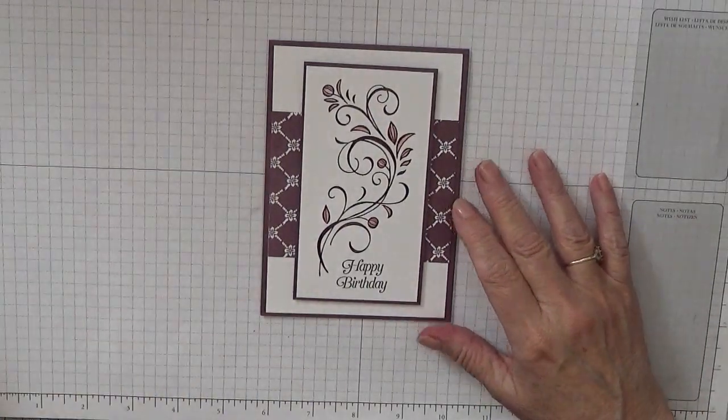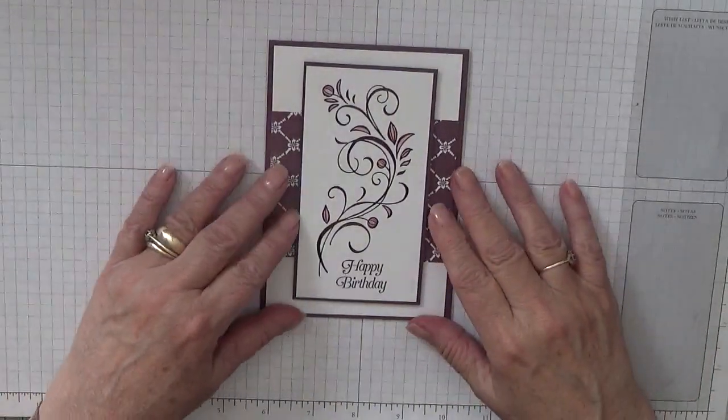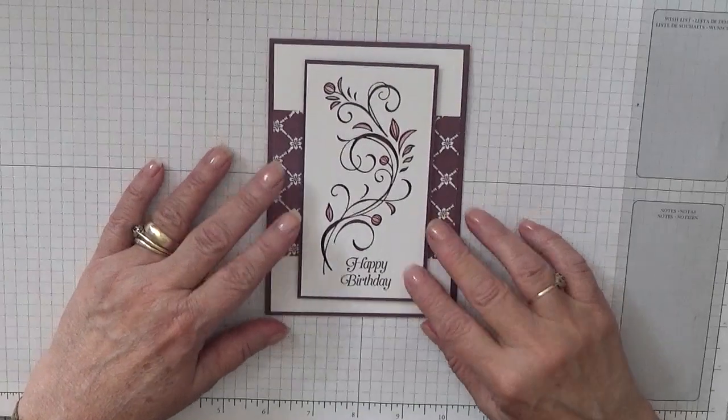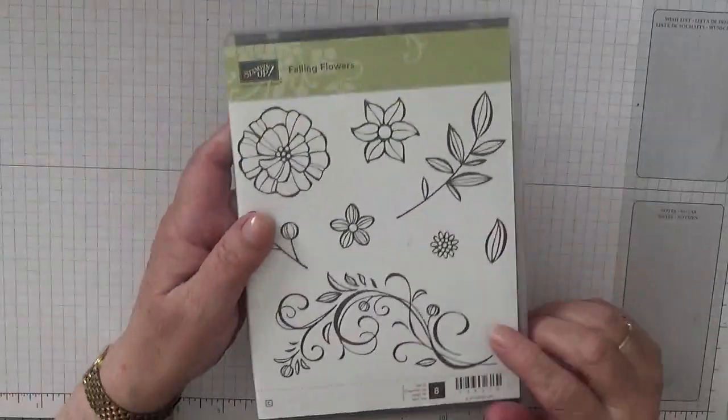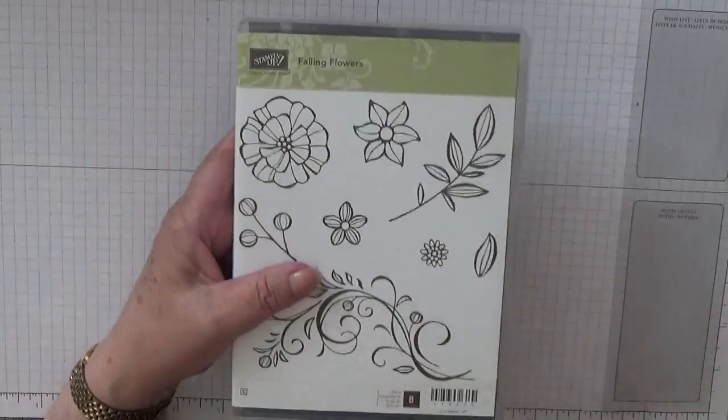Hello everybody, George Burns here. Today I'd like to show you how I made this quick, easy, simple card. Quite pretty. I used the stamp set Falling Flowers and I used that image. This stamp set is retiring.